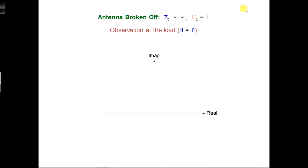Let's analyze the voltage along the transmission line when there is an open circuit load, and see if we get any clues about what may have caused the transmission line to melt.